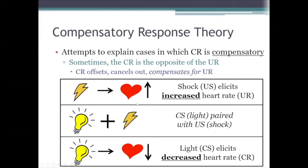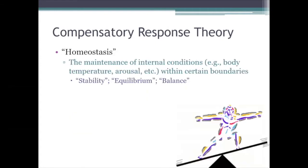So the unconditioned response to the shock is actually the opposite of the conditioned response to the stimulus that the animal associates with shock. That's a good example of a compensatory conditioned response. Before I go into further detail, a concept I should cover first is something called homeostasis, which you might already be familiar with. I have a formal definition on the slide here, but the basic idea is that you want to keep things on an even keel — keeping heart rate, body temperature, blood pressure, and so on within a normal range. Homeostasis is basically a state of equilibrium.